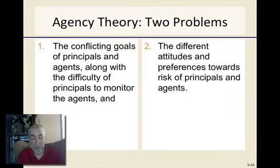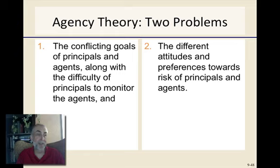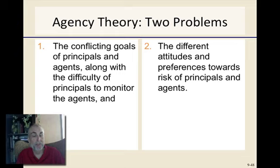Agency theory has a number of problems, and that number is greater than two. But for purposes of this lecture, we'll talk about the two main ones. The first is the conflicting goals of principals and agents, along with the difficulty of principals to monitor agents. The principals want to maximize the revenue that comes into the company, while agents typically want to maximize their own compensation. The big thing you see these days is quarterly stock reports — agents get paid on the stock price, whereas principals are mostly interested in the overall value of the company. And those two, believe it or not, are not as tightly linked as we might hope.